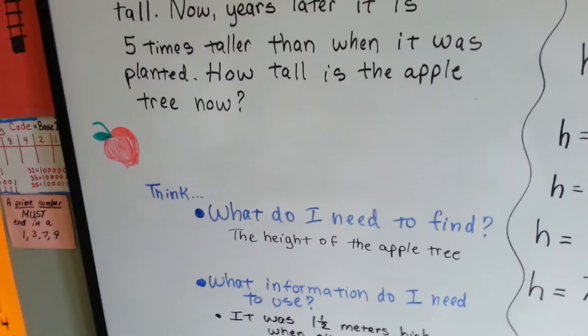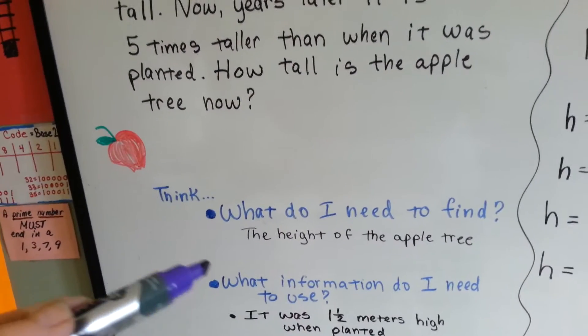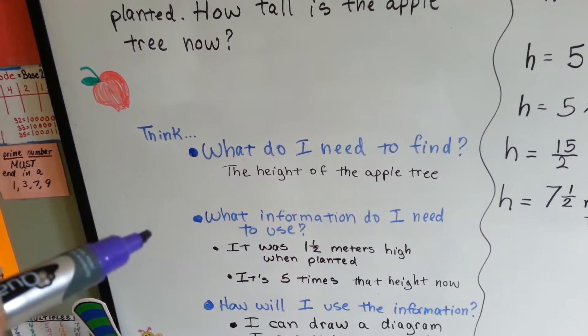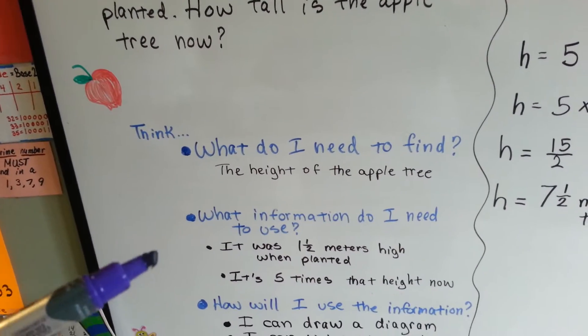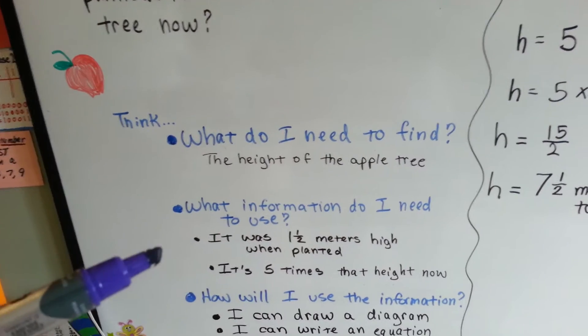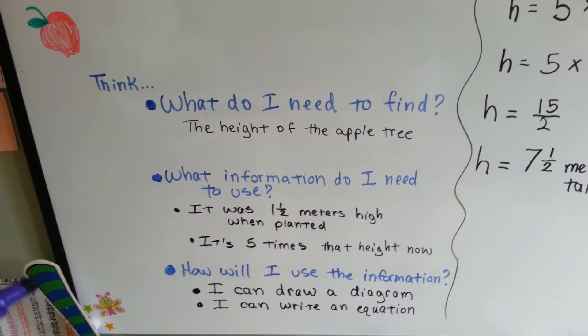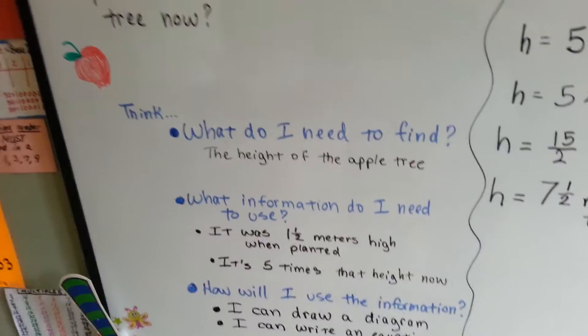So we think to ourselves, what do I need to find? I need to find the height of the apple tree now. What information do I need to use? It was one and a half meters high when planted, and it's five times that height now. How will I use the information? I can draw a diagram or write an equation.